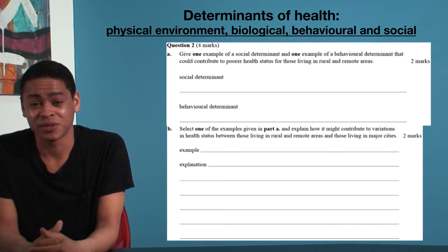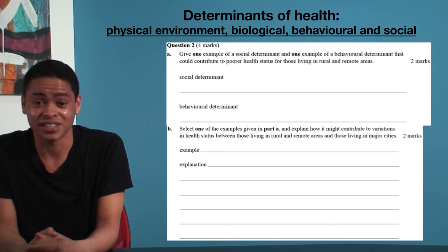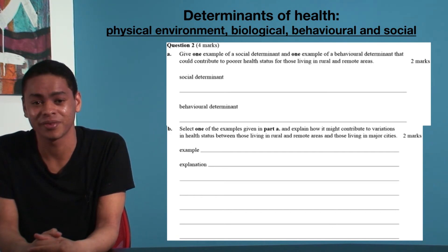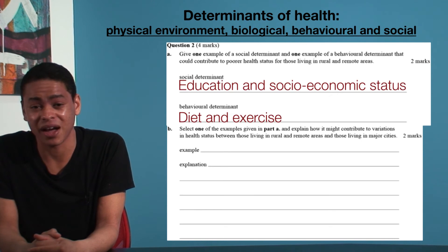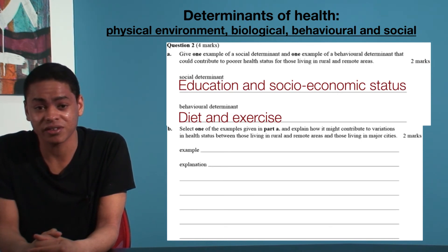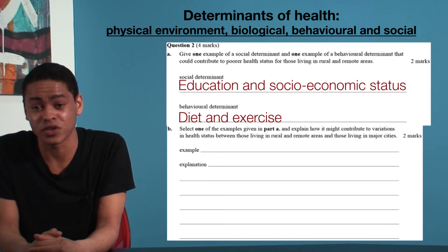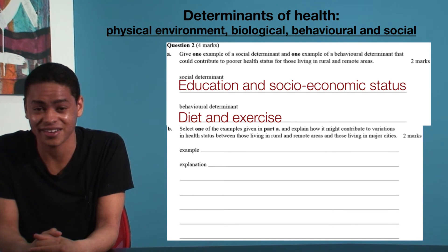The fact that this question is split over two parts makes our lives a little easier. For Part A, we need only an example of two of the determinants. Below this video, you'll find a list of examples. But for now, let's remember the biological determinant as things such as age and sex, the physical environment determinant as things such as roads and housing, the behavioural determinant as things such as diet and exercise, and the social determinant as things such as education and socioeconomic status.